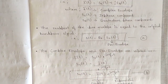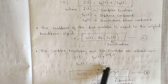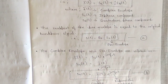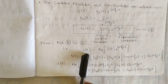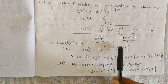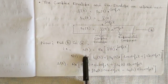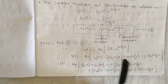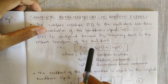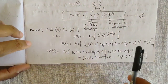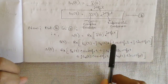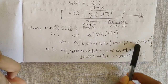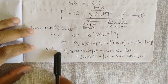Substituting equation B into equation A: s(t) = Re[s̃(t)·e^(j2πf_c·t)] = Re[(s_i(t) + j·s_q(t))·e^(j2πf_c·t)]. Using Euler's formula, e^(jθ) = cosθ + j·sinθ, we substitute cos(2πf_c·t) + j·sin(2πf_c·t), so s(t) = Re[s_i(t)·cos(2πf_c·t) + j·s_i(t)·sin(2πf_c·t) + j·s_q(t)·cos(2πf_c·t) + ...].